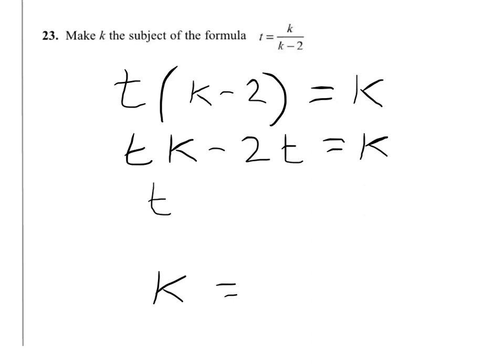We leave our tk where it is, bring the k from the right-hand side to the left and change its sign, and move the minus 2t to the right where it becomes plus 2t.